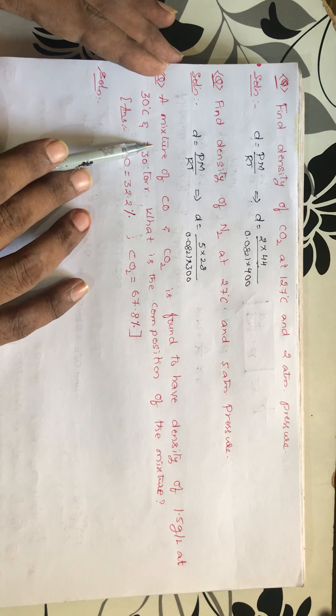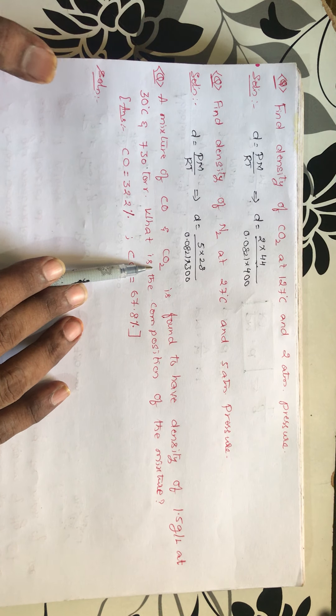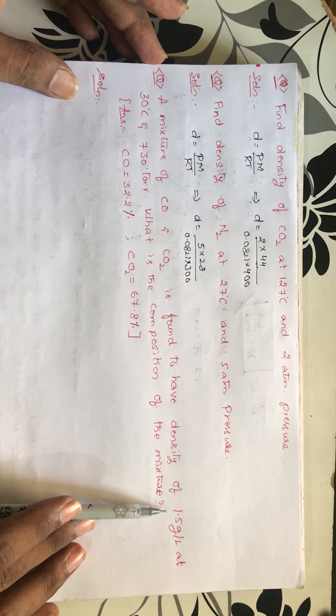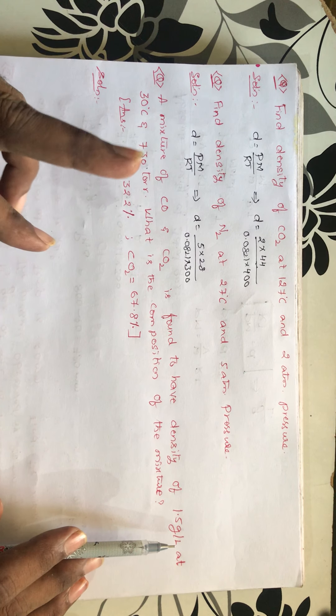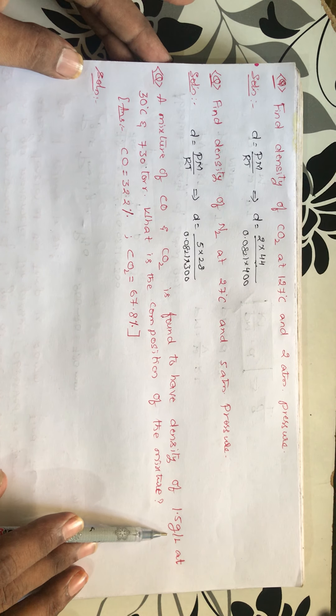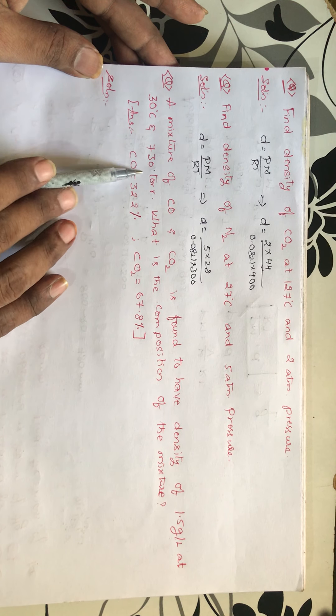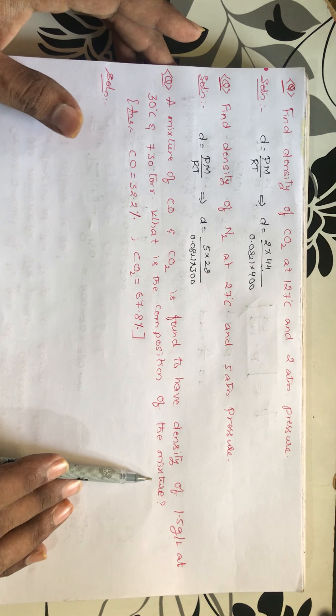So this is the next question. And this is the question for you. This is nothing but a mixture of CO and CO2. Two gases he is taking, CO as well as CO2. He is found to have the density of 1.5 gram per liter at 30 degrees centigrade. And he is mentioning pressure also.